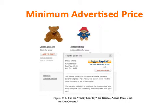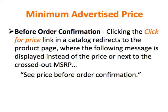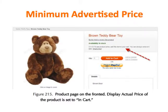Check this out — for the Teddy Bear toy, the Display Actual Price is set to On Gesture, and you can see the Click for Price link right above. Before Order Confirmation: clicking the Click for Price link in a catalog redirects to the Product page, where the message 'See Price Before Order Confirmation' is displayed instead of the price or next to the crossed-out MSRP. The What's This link points to further explanations. The actual price and totals are displayed on the Order Review step of the One Page Checkout, or on the Order Review pages of Google Checkout or PayPal Checkout, depending on what you've decided to use. Here, on the front end, the Product page is displaying actual price of the product set to In Cart.